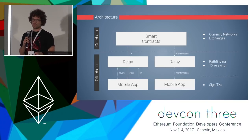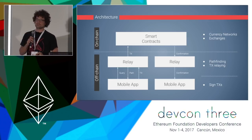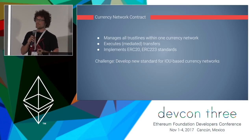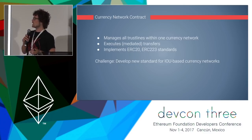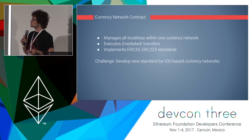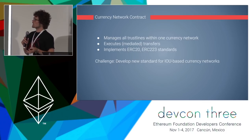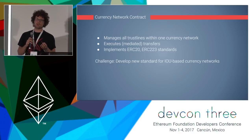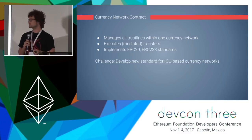The currency network contract manages all the TrustLines within one currency network. It keeps track of balances between two friends and the credit limits they gave each other. It has logic to execute mediated transfers, updating all balances accordingly and ensuring they stay within the given credit limits. We want to implement existing token standards, however this won't be fully possible because our currency network is IOU-based — for example, a user's balance can be negative, and transfers need an additional parameter: the path over which the transfer should happen. So we're developing a new standard for IOU-based currency networks.